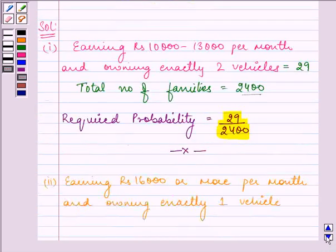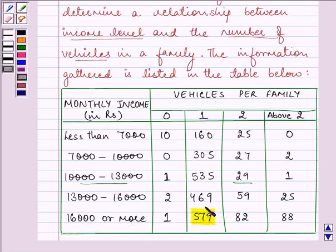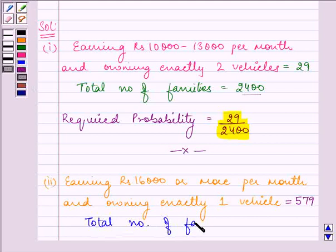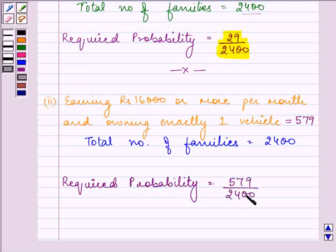For the second part, we need to find the probability of earning Rs. 16,000 or more per month and owning exactly one vehicle. From the table, the number corresponding to the 16,000 or more income group owning one vehicle is 579. The total number of families is 2400. So the required probability is 579/2400.